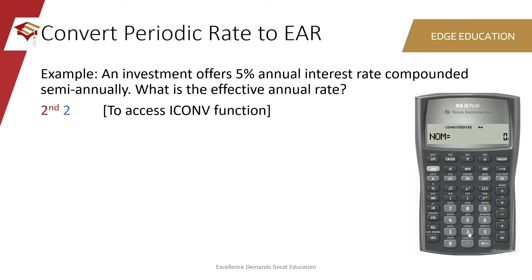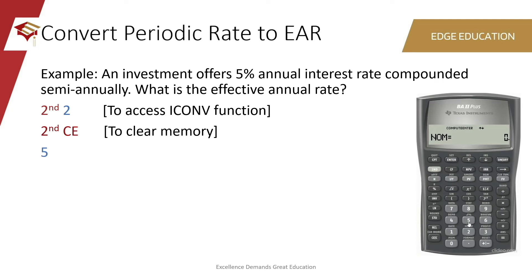Whilst within the application and before beginning any calculation, we must make sure that the calculator memory is clean. To do this, press the yellow button 2nd and CE for clear work. On your calculator, you will be able to see NOM, which stands for nominal. This is the periodic interest that you must enter here. Since the question says that the interest is being earned at 5% with semi-annual compounding, that is our periodic rate. So we'll go ahead and type 5, and press the enter button on top.